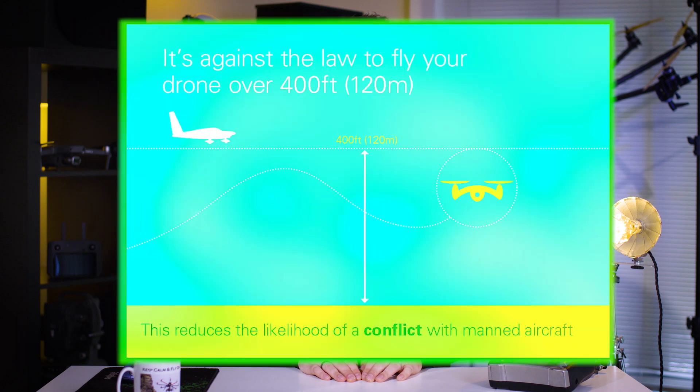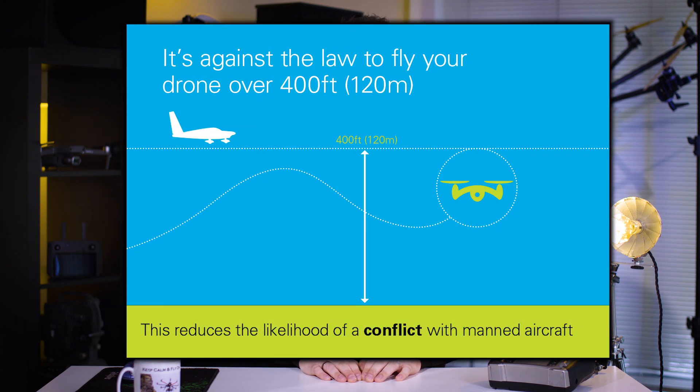Rule number two: it's against the law to fly your drone over 400 feet, or 120 meters. This just reduces the likelihood of conflict with a manned aircraft. The best way to visualize this rule is to imagine a piece of string 400 feet long tied to the bottom of your drone, with the other end anchored to the surface of the earth — you can't go higher than 400 feet.